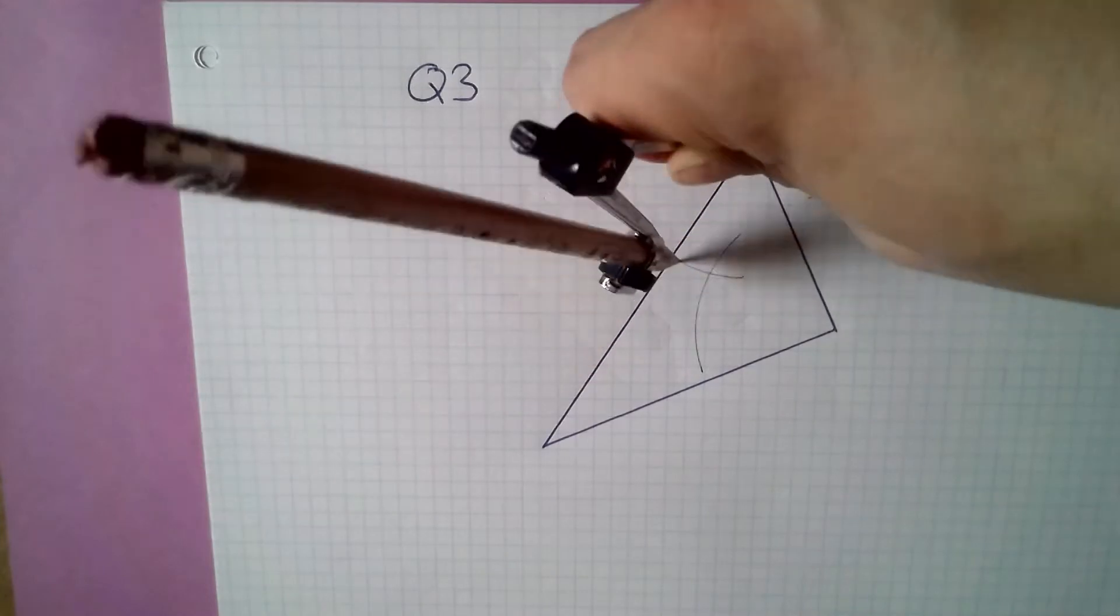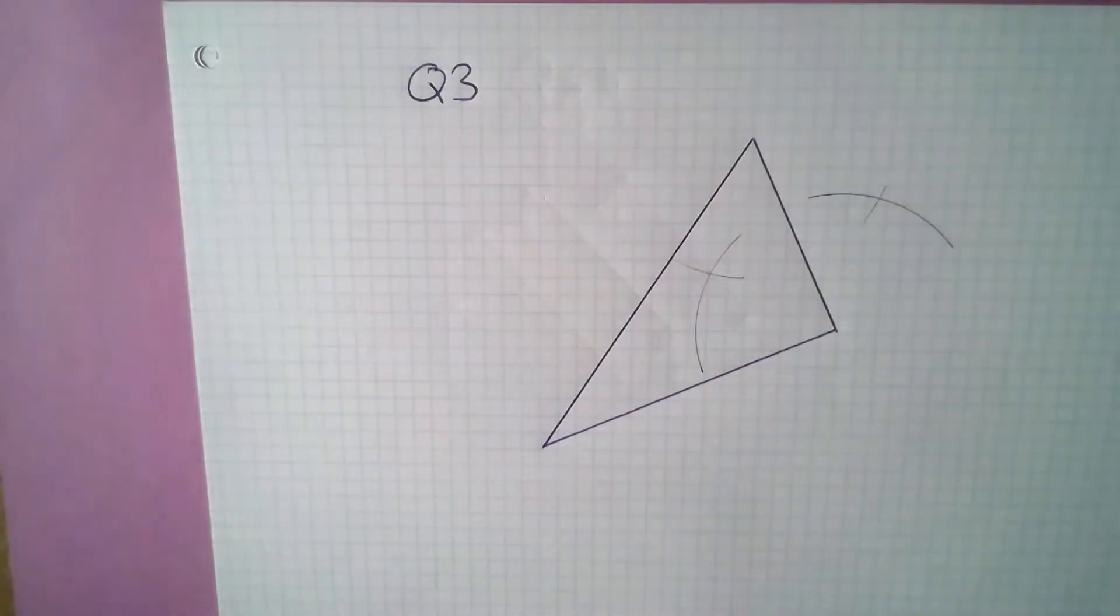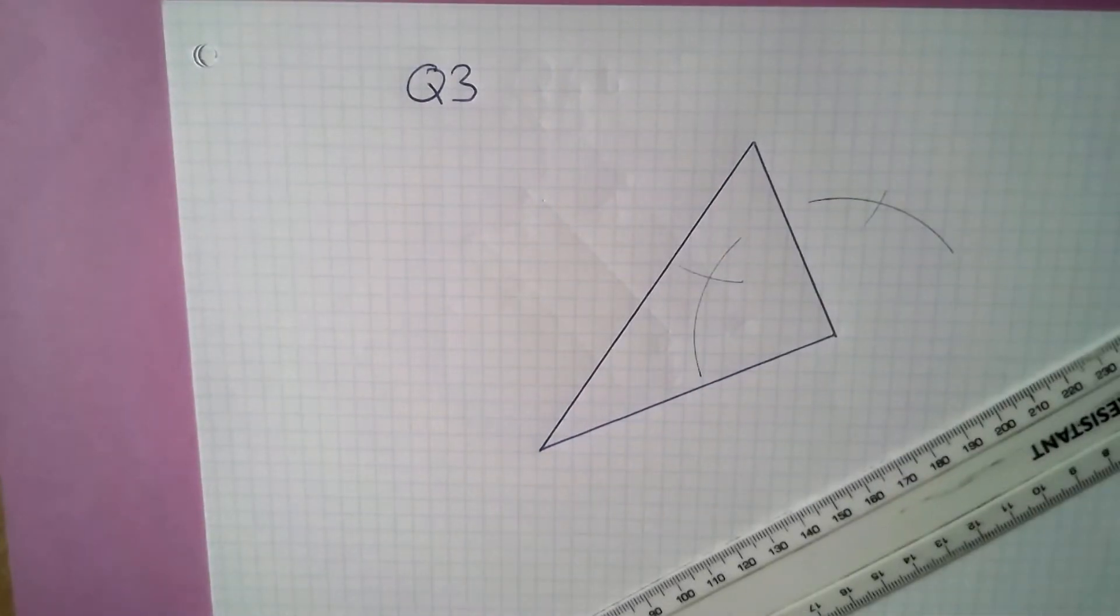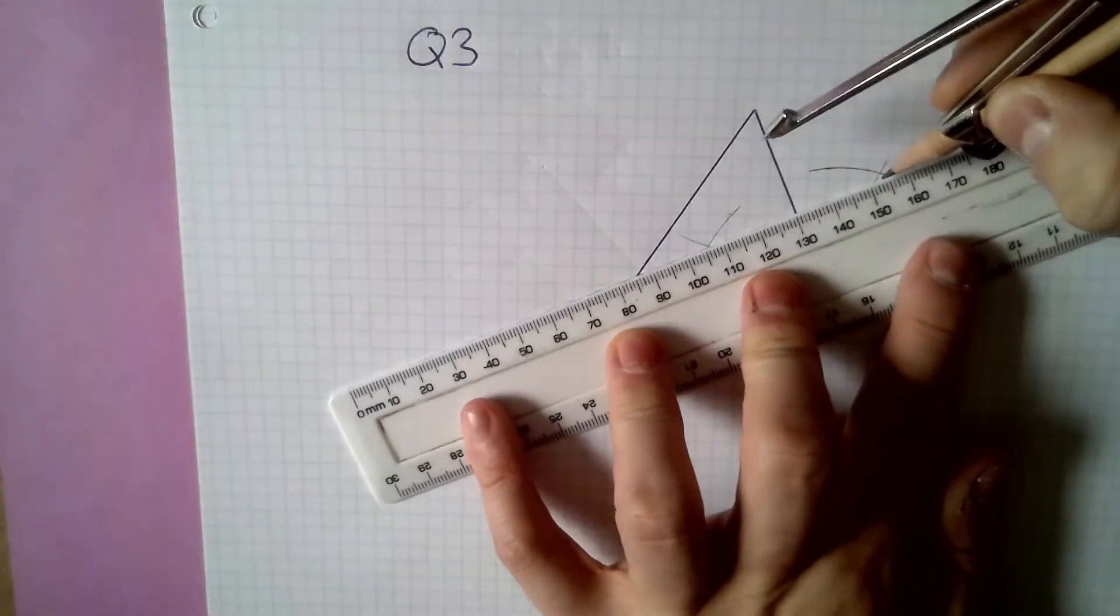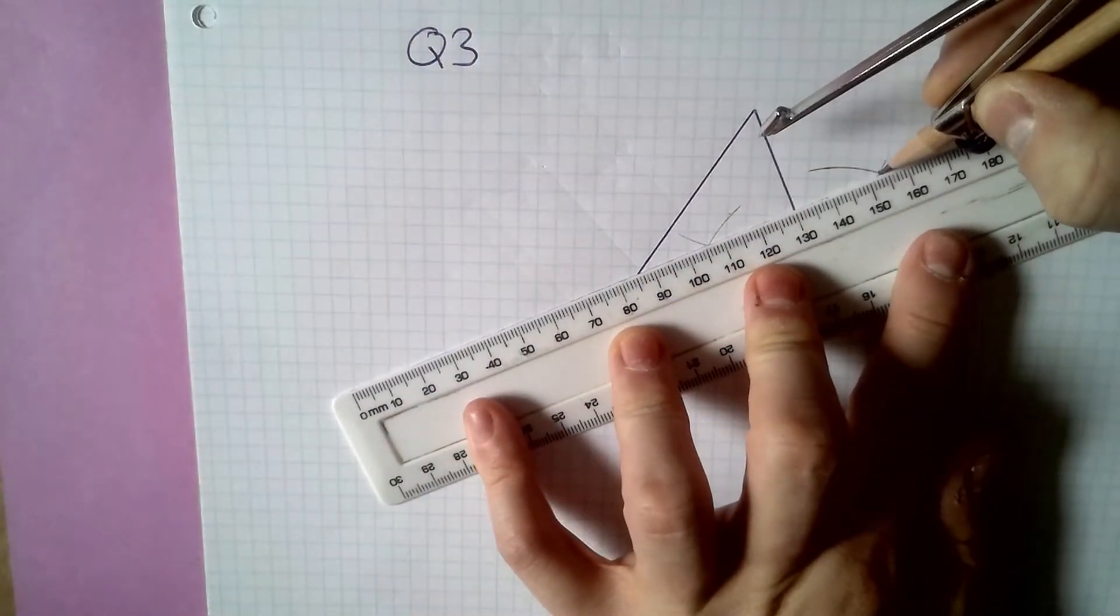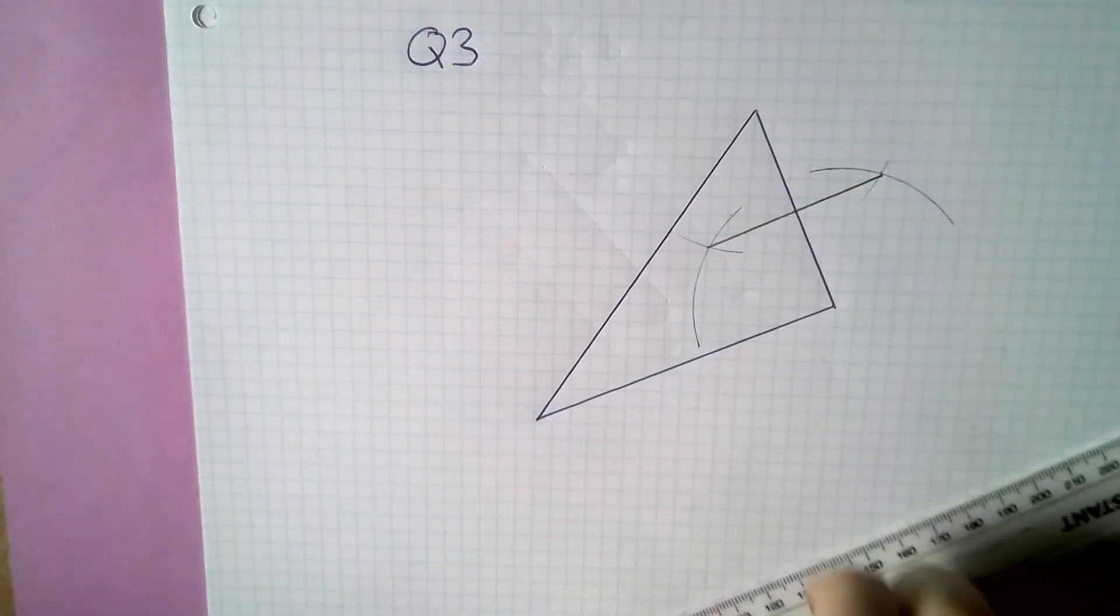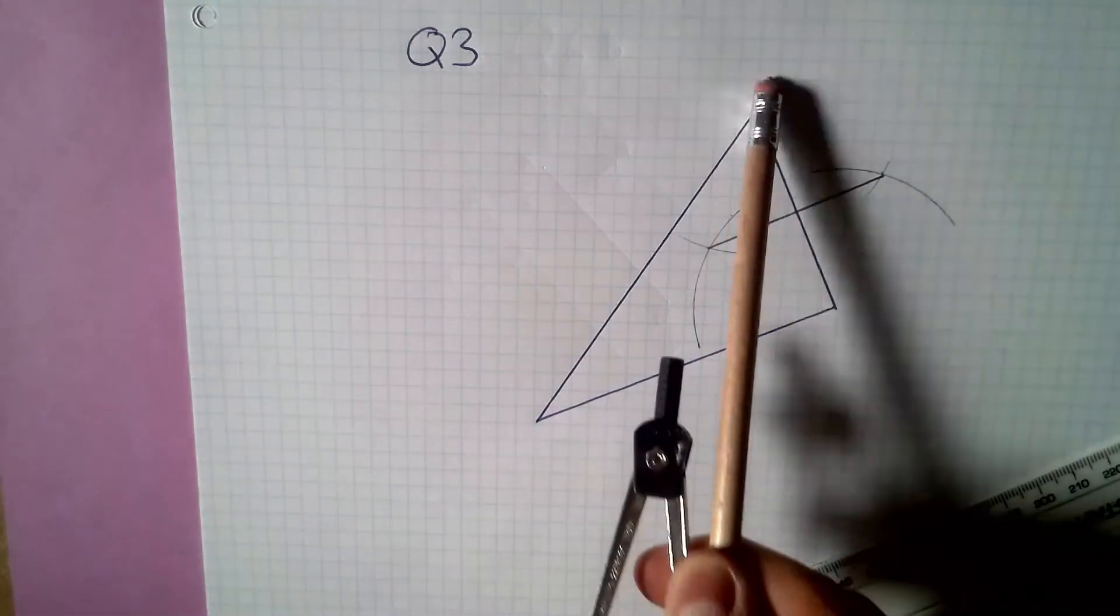Stab it in this corner, draw an arc, draw an arc. There's the two crossing points and we can just join those up. That has perpendicular bisected the first side.